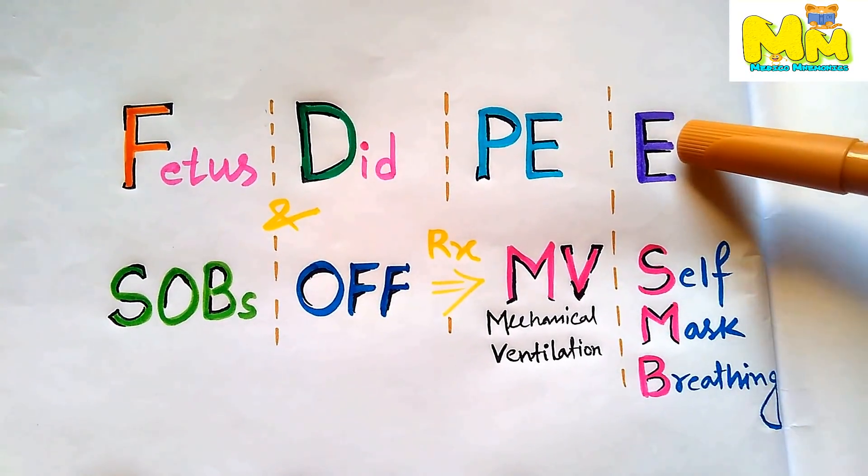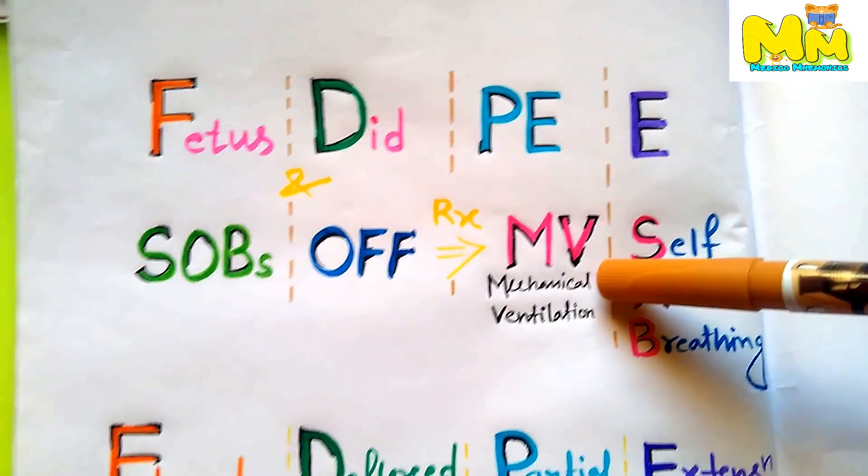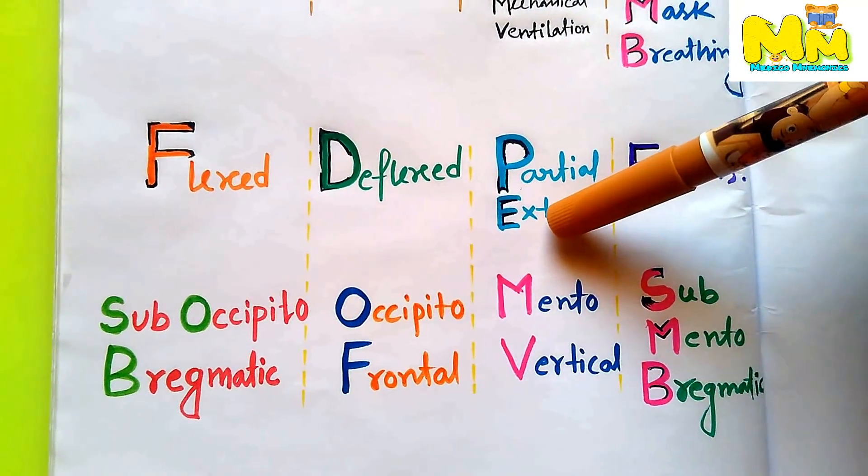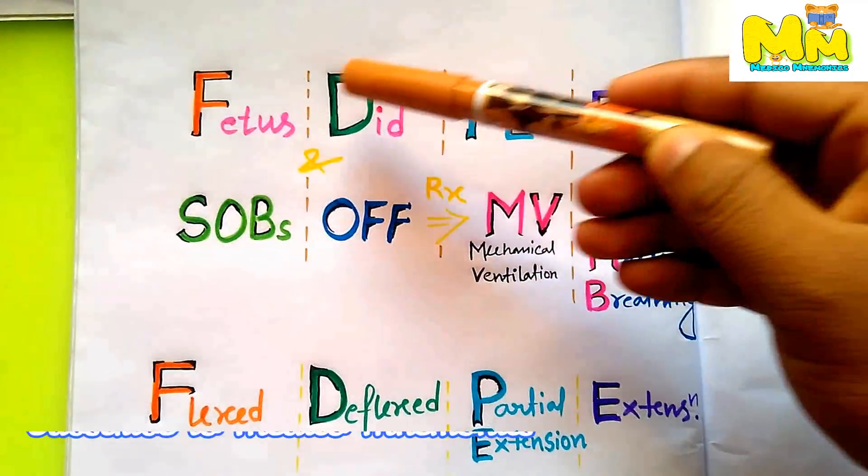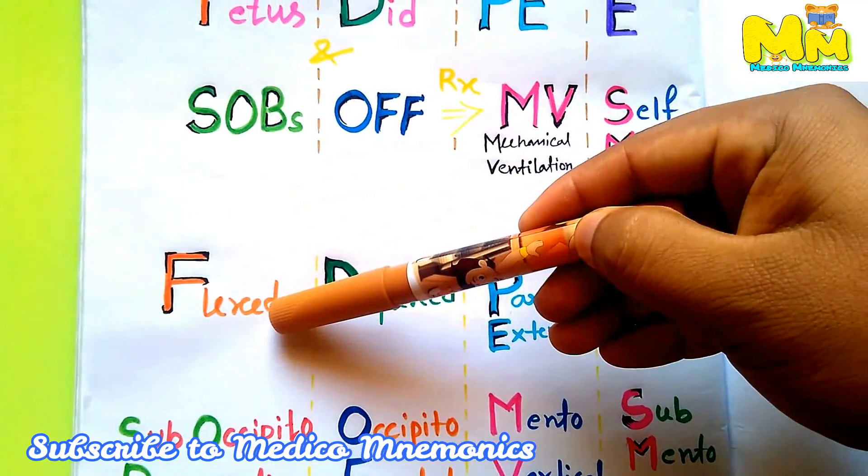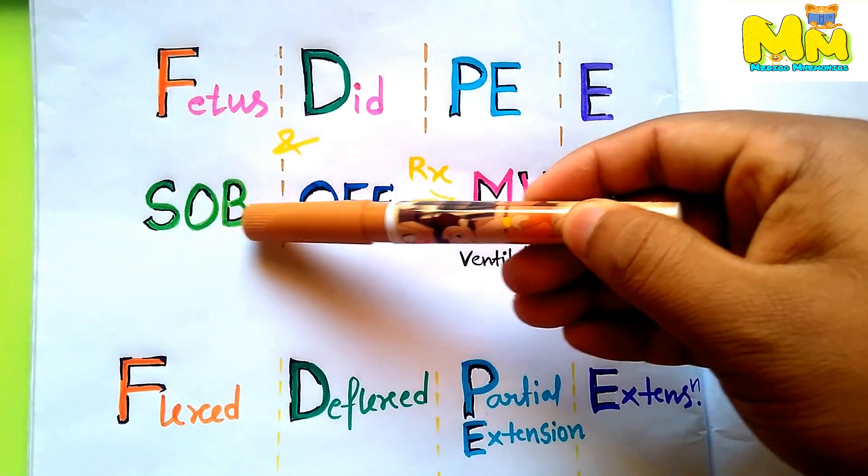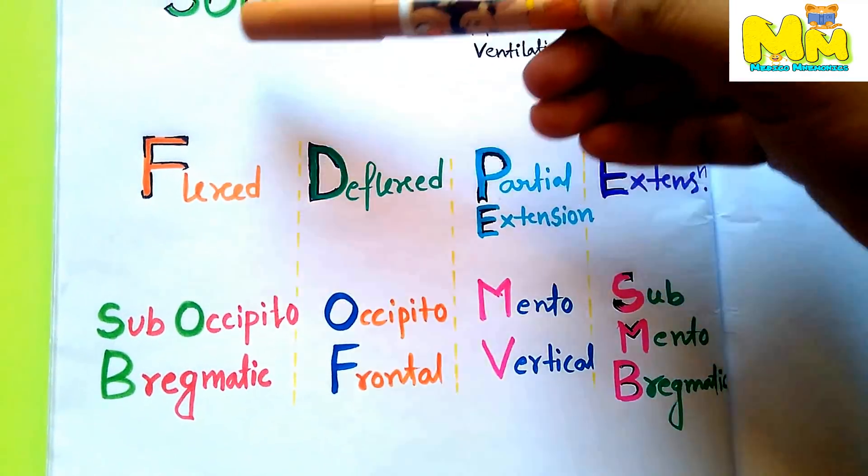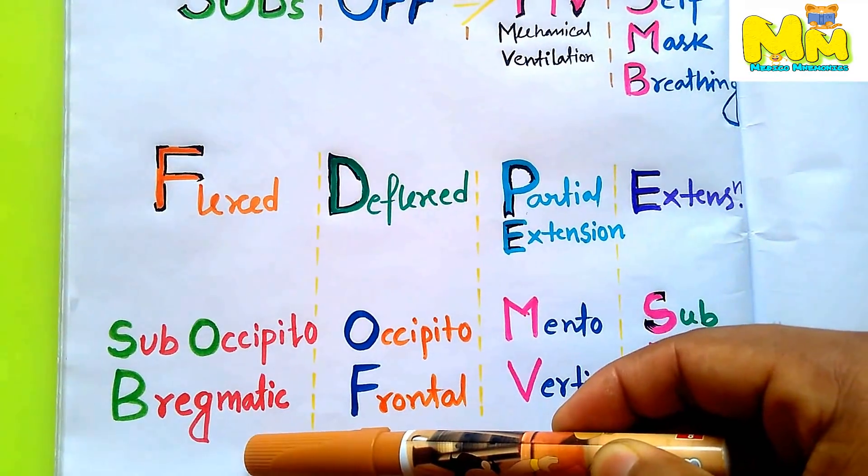The letters I have used here correspond to the information below. F for fetus, F for flexed head, and there is SOB. So the engaging diameter will be suboccipitopragmatic.